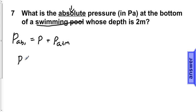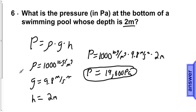The pressure at the bottom of the swimming pool is 19,600 pascals. For an explanation on how to get this number, consult the video for question number 6.